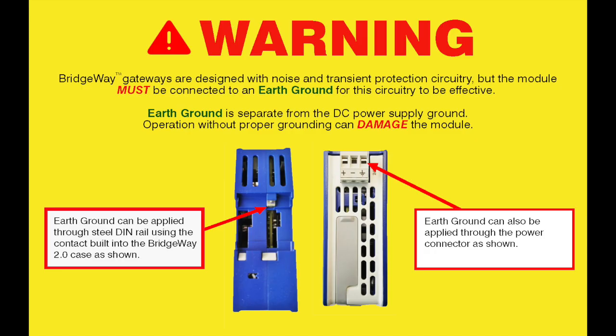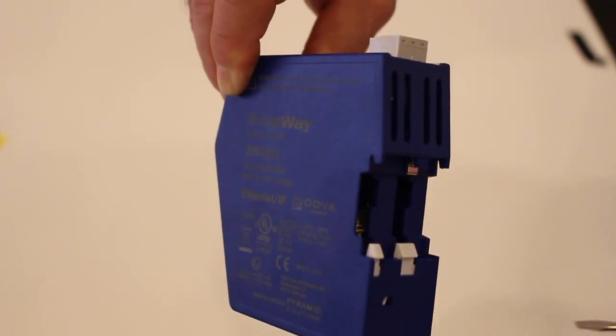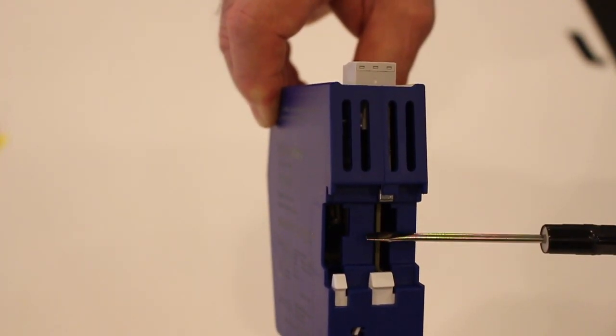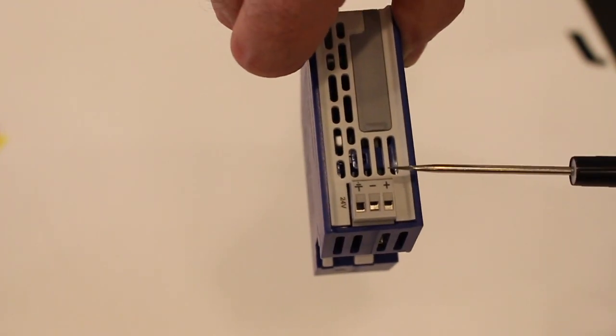Bridgeway 2.0 gateways are designed with noise and transient protection circuitry, but the module must be connected to an earth ground for the circuitry to be effective. Earth ground is separate from the DC power supply ground. Operation without proper grounding can damage the module. Earth ground can be applied through a steel DIN rail using the contact built into the Bridgeway 2.0 case or through the 3-pin terminal block connector.